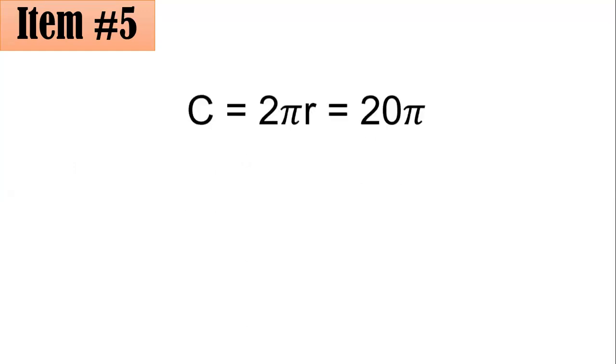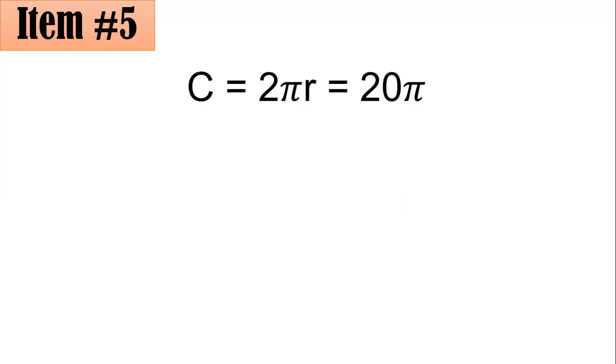So when we speak about circumference, the formula is 2 pi r. And in this case, the circumference is 20 pi. So we set the 2 pi r as your 20 pi. Dividing both sides by 2 pi with the aim of looking for the value of your radius, then r is equal to 10.